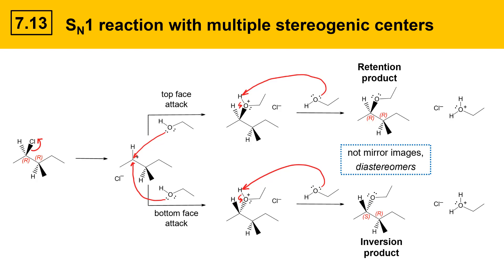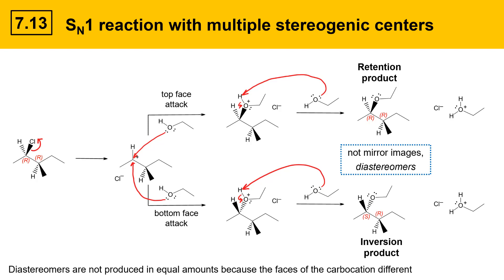These molecules are not mirror images of each other, so this does not give a pair of enantiomers — these are actually diastereomers. This is pretty obvious when you look at the R and S configuration: the upper product has an R-R configuration, and the lower product has an S-R configuration. Enantiomers have opposite configurations at every stereogenic center, so clearly these are not enantiomers. These diastereomers are not produced in equal amounts because the faces of the carbocation are different — the top-face approach is hindered by a methyl group, whereas the bottom-face approach only has a hydrogen to deal with, potentially leading to different amounts of each diastereomer being produced.